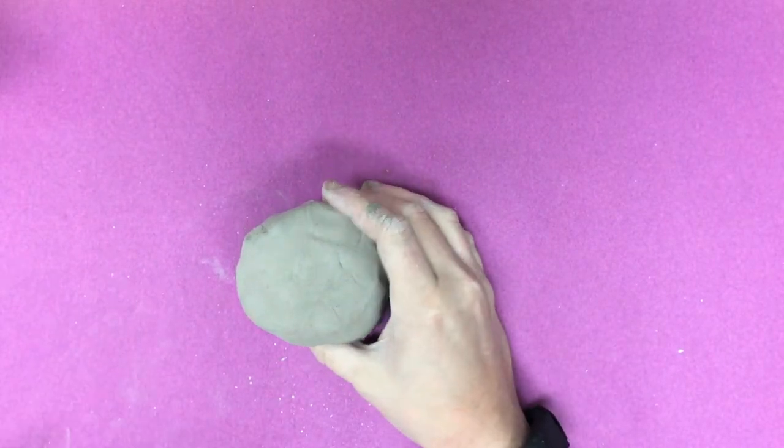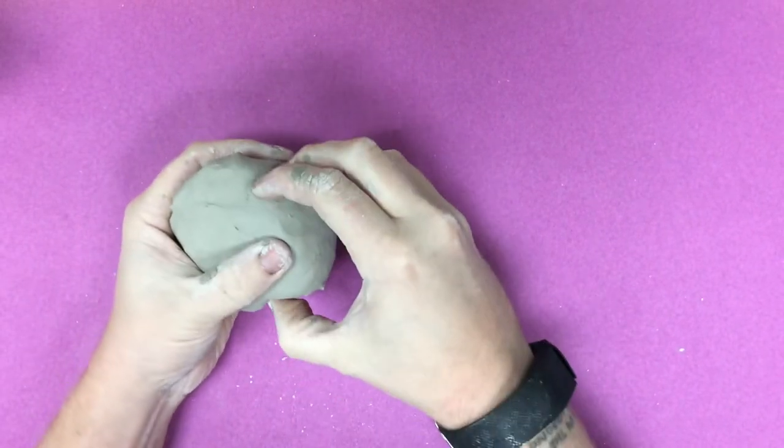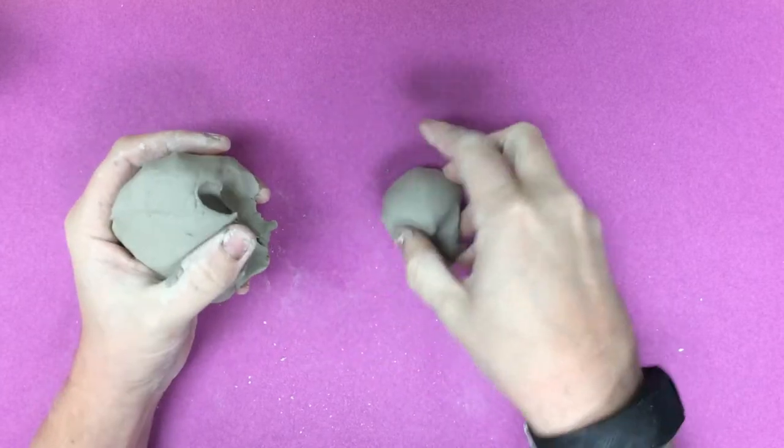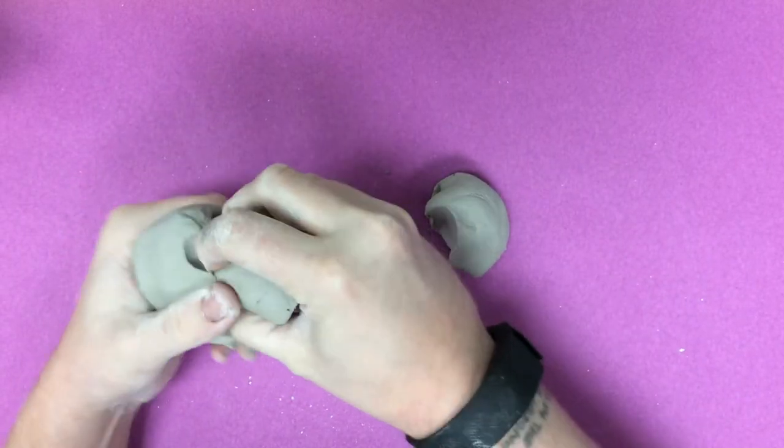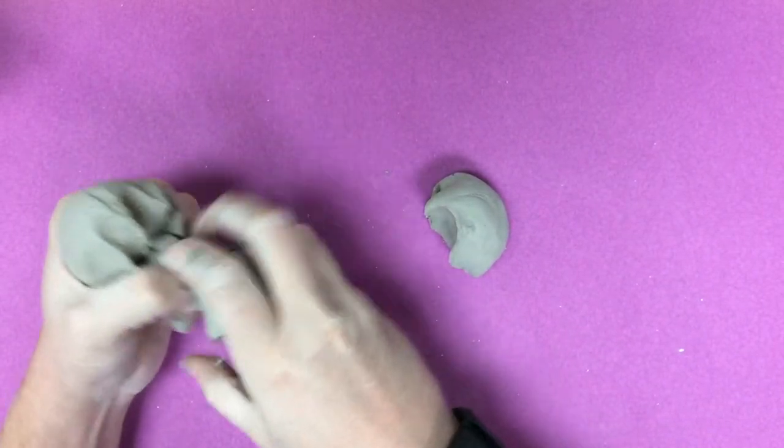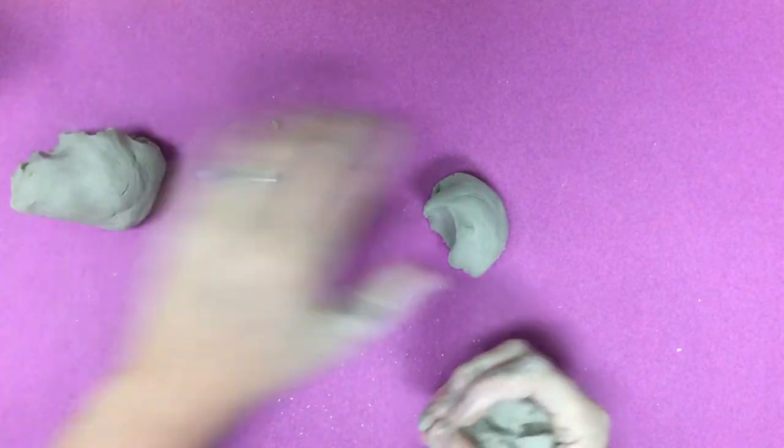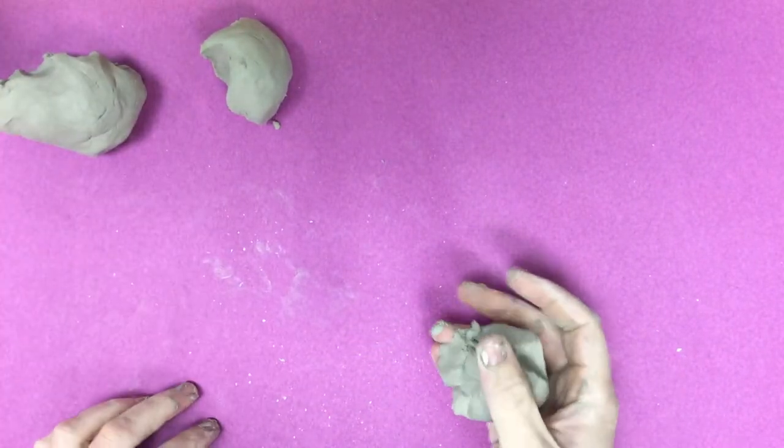Today I'm going to make a little cottage out of clay. The first thing I'm going to do is divide my clay into three chunks, and I'm going to set two of those aside.